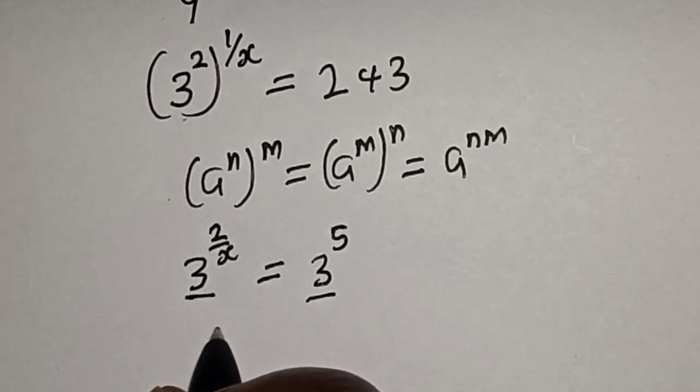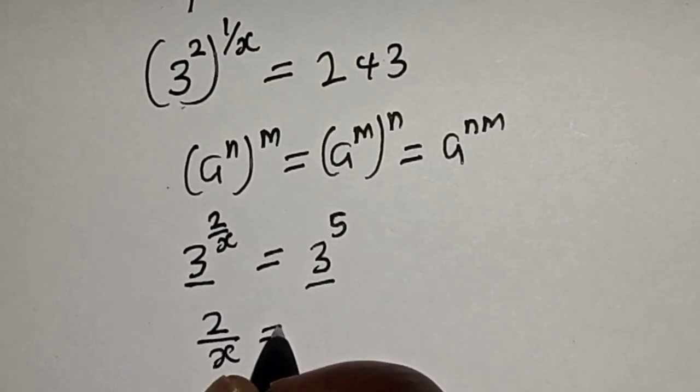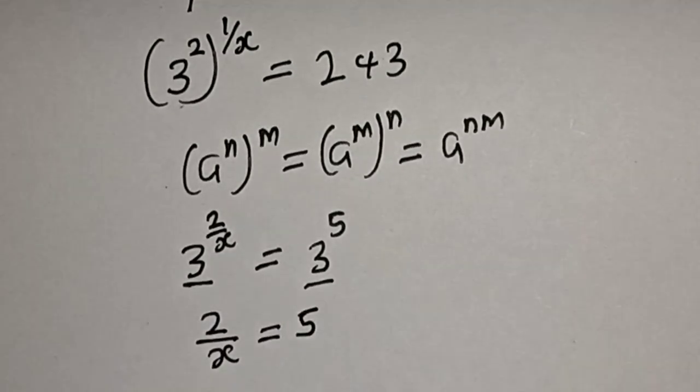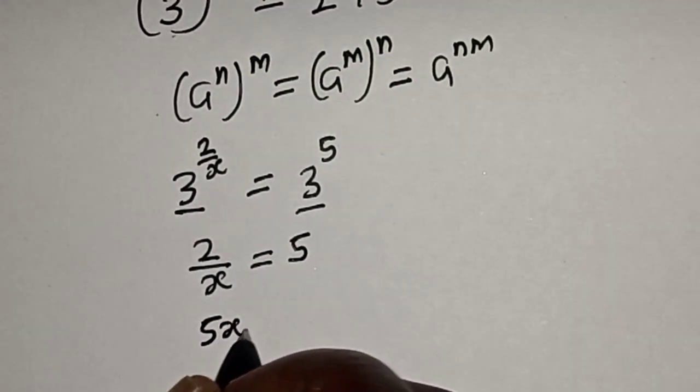Then we have 2 divided by x equals 5. Now if you cross multiply, 5x equals 2.